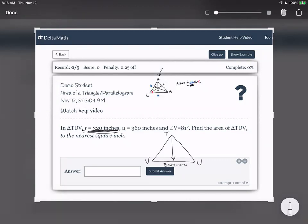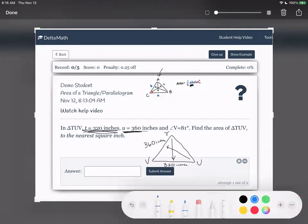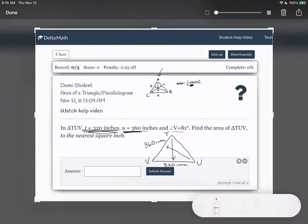Okay, U, lowercase u is 360. So that must be the side directly across from capital U, the angle. And I'm going to do this in a different color. Angle V is 81. So I'm going to put that over here.